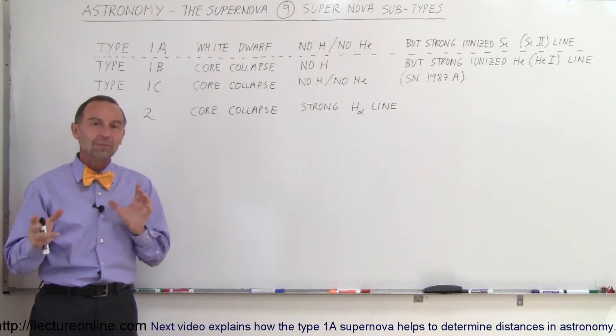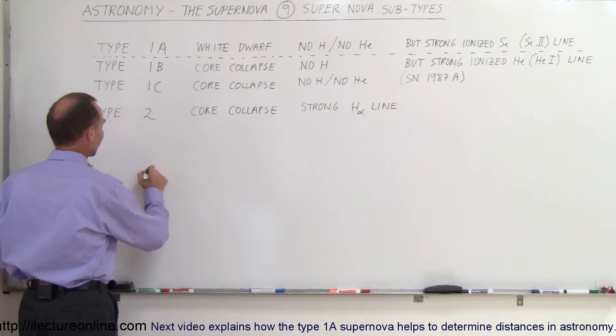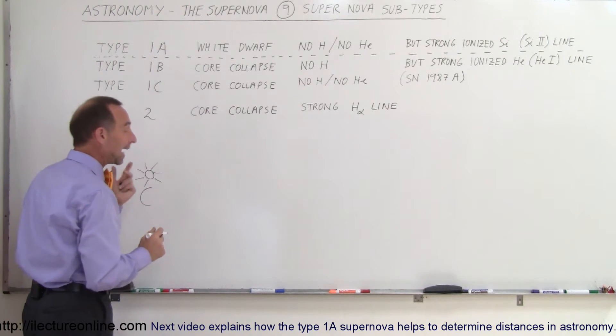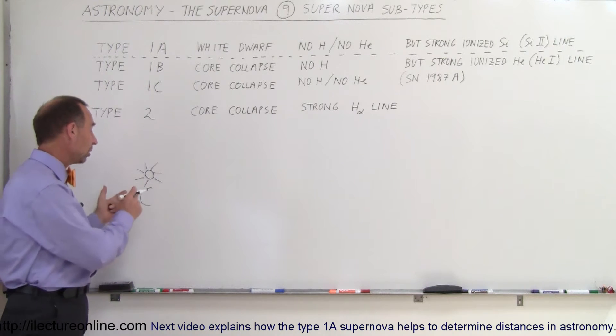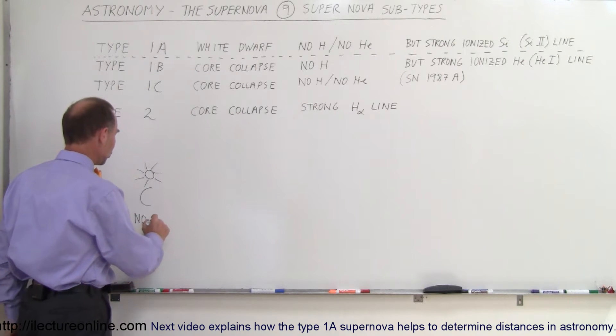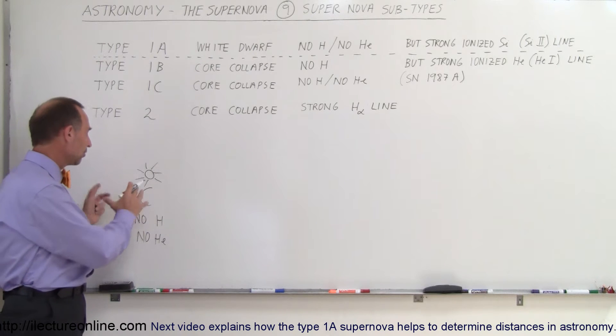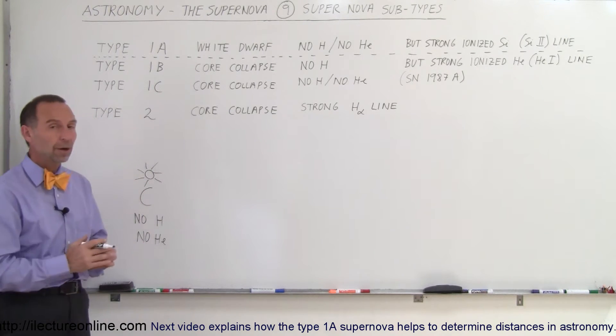The way we've traditionally been able to tell them apart is with the Type 1a. Since it's a white dwarf that's exploding, it's basically a ball of carbon. When a white dwarf explodes, you would not expect to see any hydrogen or helium, which is normally a large part of any star that would explode. White dwarf explosions are usually devoid of hydrogen and helium, so when we look at the light curve, we do not see any significant amount of hydrogen and helium in those explosions. That's how we're able to tell them apart.